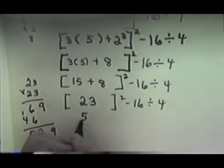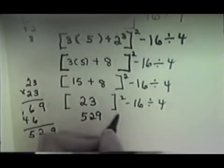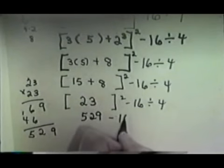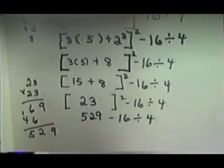So I need to write that down and copy the rest of the problem down. 529 minus 16 divided by 4. Okay, so I've finished doing my exponents. So I go to my next rule.